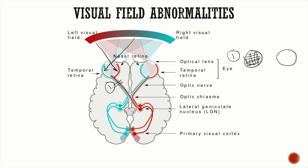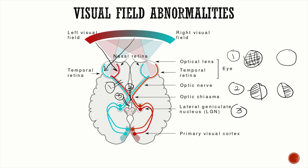A lesion of the optic chiasma affects the crossing nasal fibers from each optic nerve, which carry images from the temporal fields — resulting in bitemporal hemianopia. A lesion of the optic tract affects the temporal fibers on the same side and the crossed nasal fibers, resulting in a homonymous hemianopia — loss of the nasal field on that side and the temporal field on the opposite side.